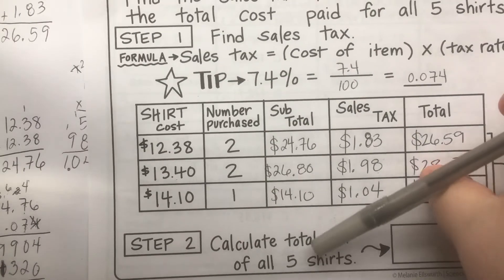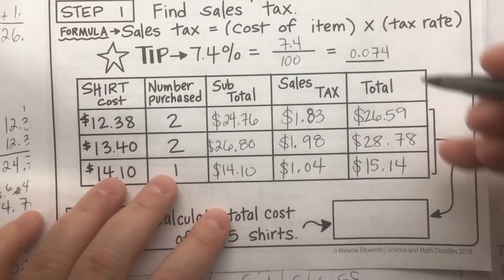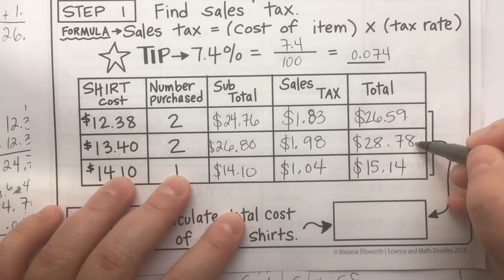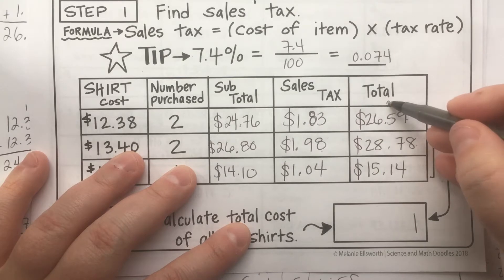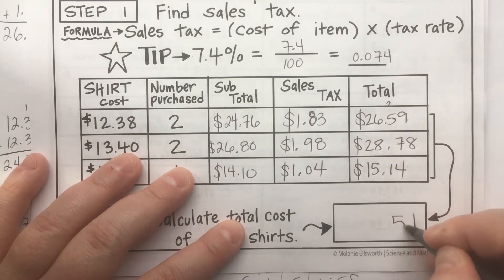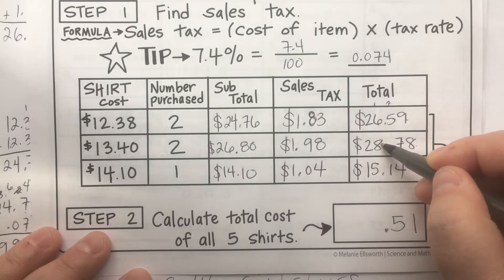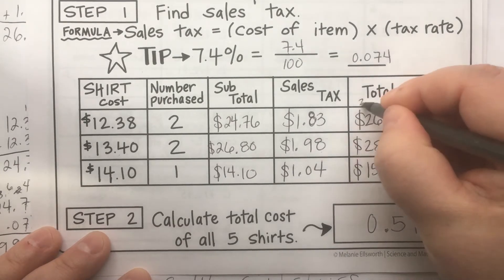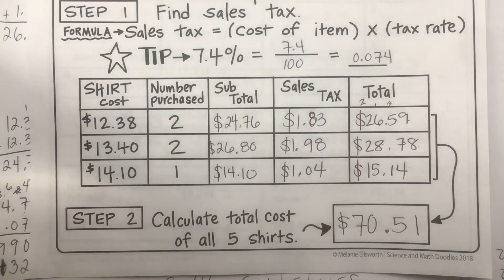To sum it all up, we add the totals for all three groups of shirts. Nine plus eight is seventeen plus four is twenty-one. Two plus five plus seven is fourteen plus one is fifteen. Adding the dollar amounts across all five shirts: the grand total for all five shirts is seventy dollars and fifty-one cents after tax.